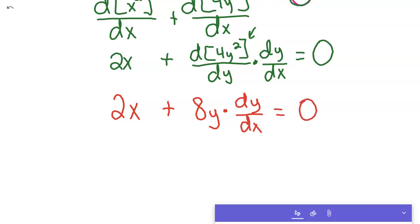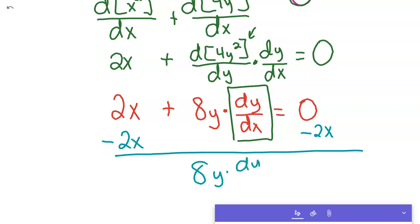And we're after the derivative, so we're going to solve for this dy dx. We're going to get that by itself. So, in order to do that, we're going to subtract 2x from both sides of the equation. And you're left with, then,